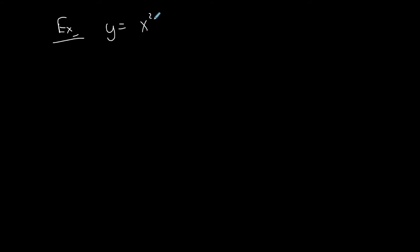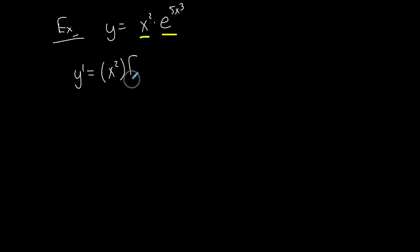Now let's do more complicated derivatives using the product rule. Let's say we have x squared times e to the 5x cubed. To find the first derivative we need a product rule because it's a product of two functions. The derivative of a product is the first times the derivative of the second, plus the second times the derivative of the first. The first times the derivative of the second: since the base is e, the derivative of e to the 5x cubed is e to the 5x cubed times the derivative of the exponent, which is 15x squared.